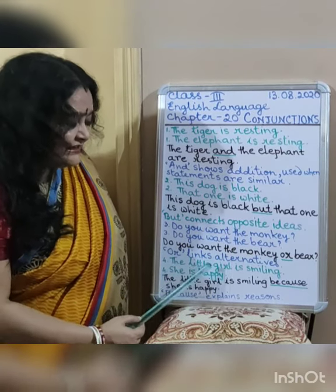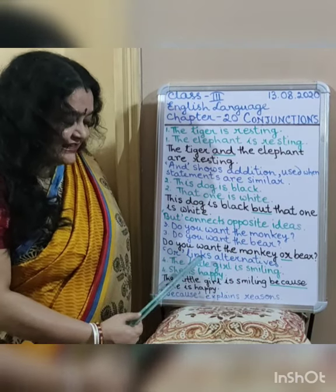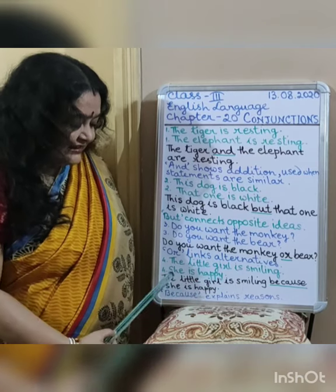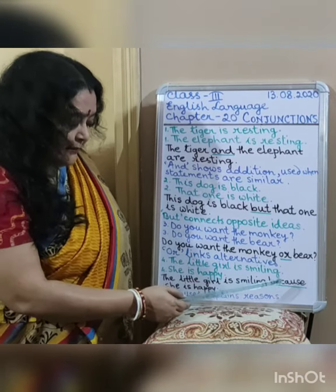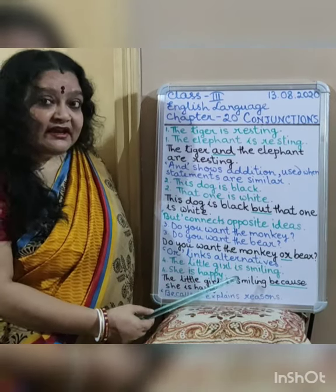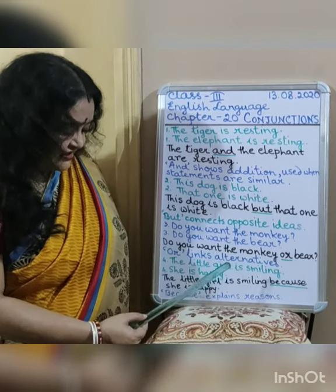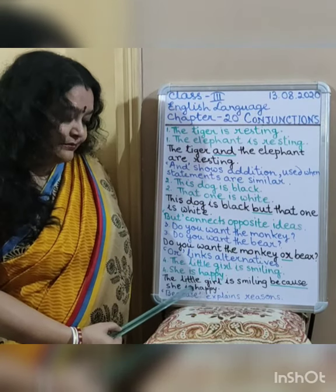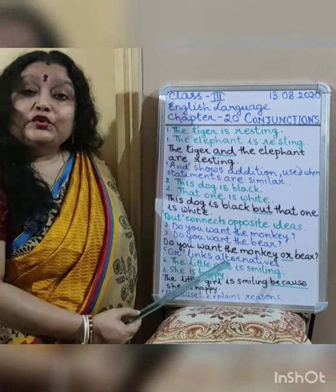The little girl is smiling. She is happy. The little girl is smiling because she is happy. BECAUSE is the conjunction here, which can be used to explain reasons.